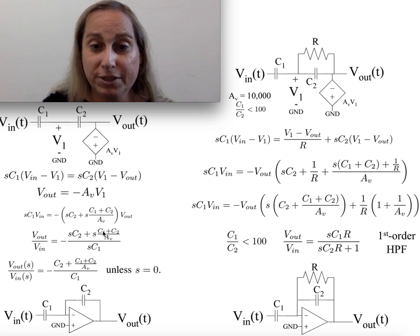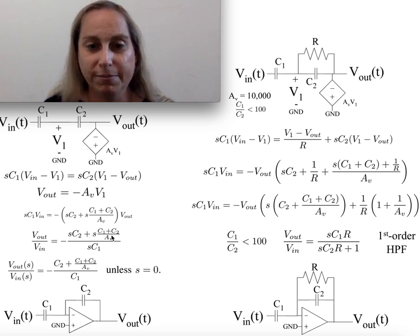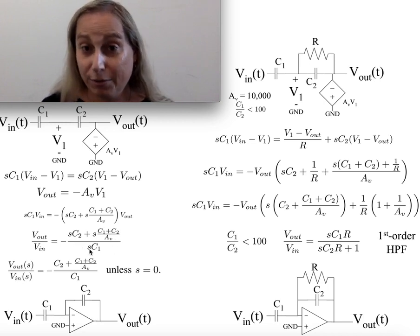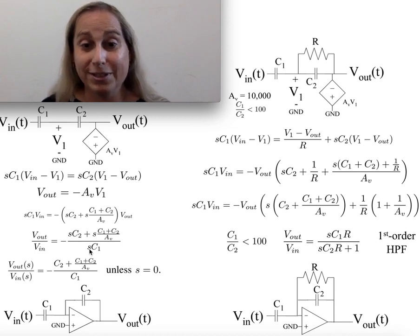The C plus the term is going to be C1 plus C2 over A sub V, and all of this is an S. Now, if S is not equal to zero, of course, I can divide through by S. If S is equal to zero, this is not appropriate, but S equal to zero is DC.